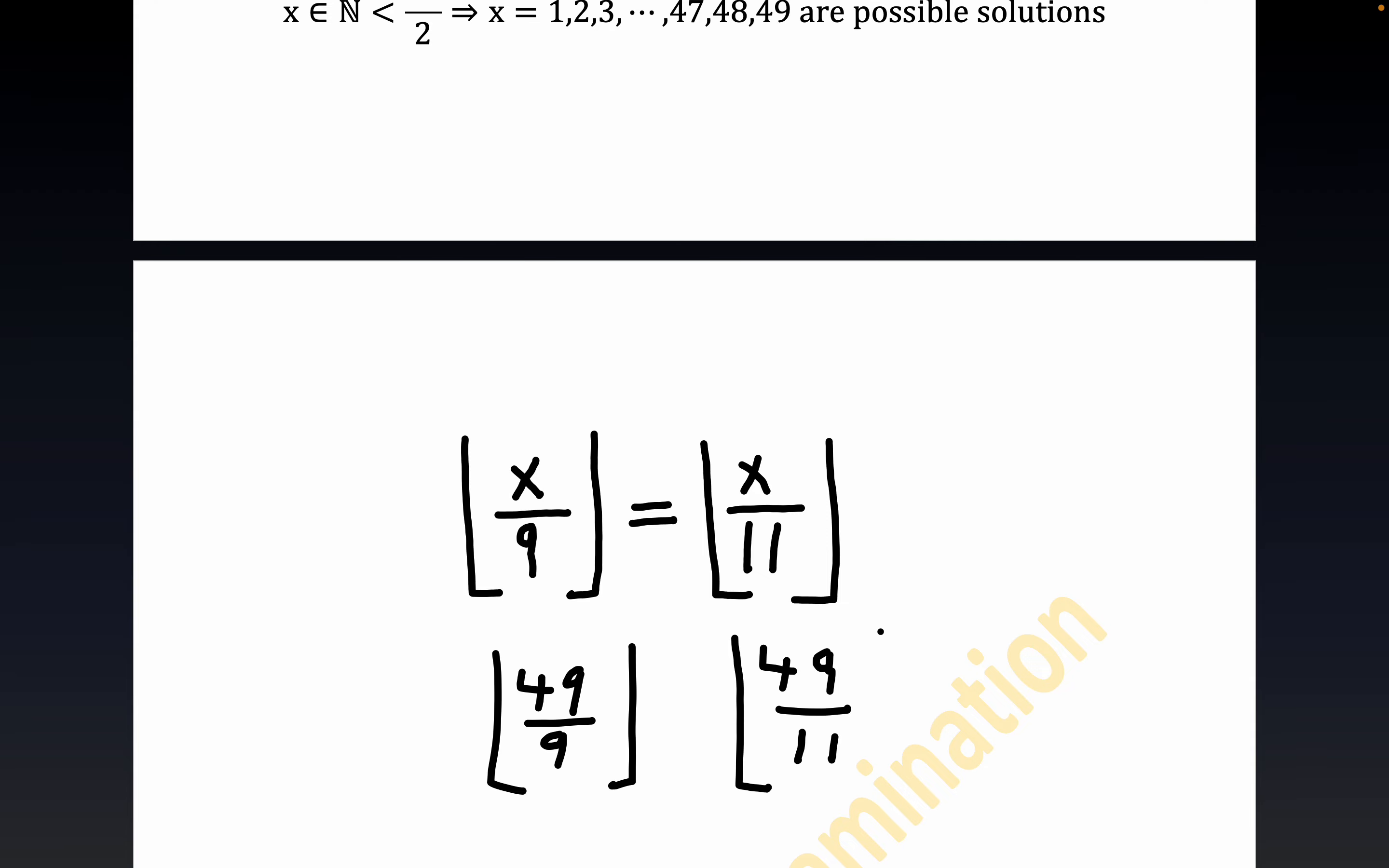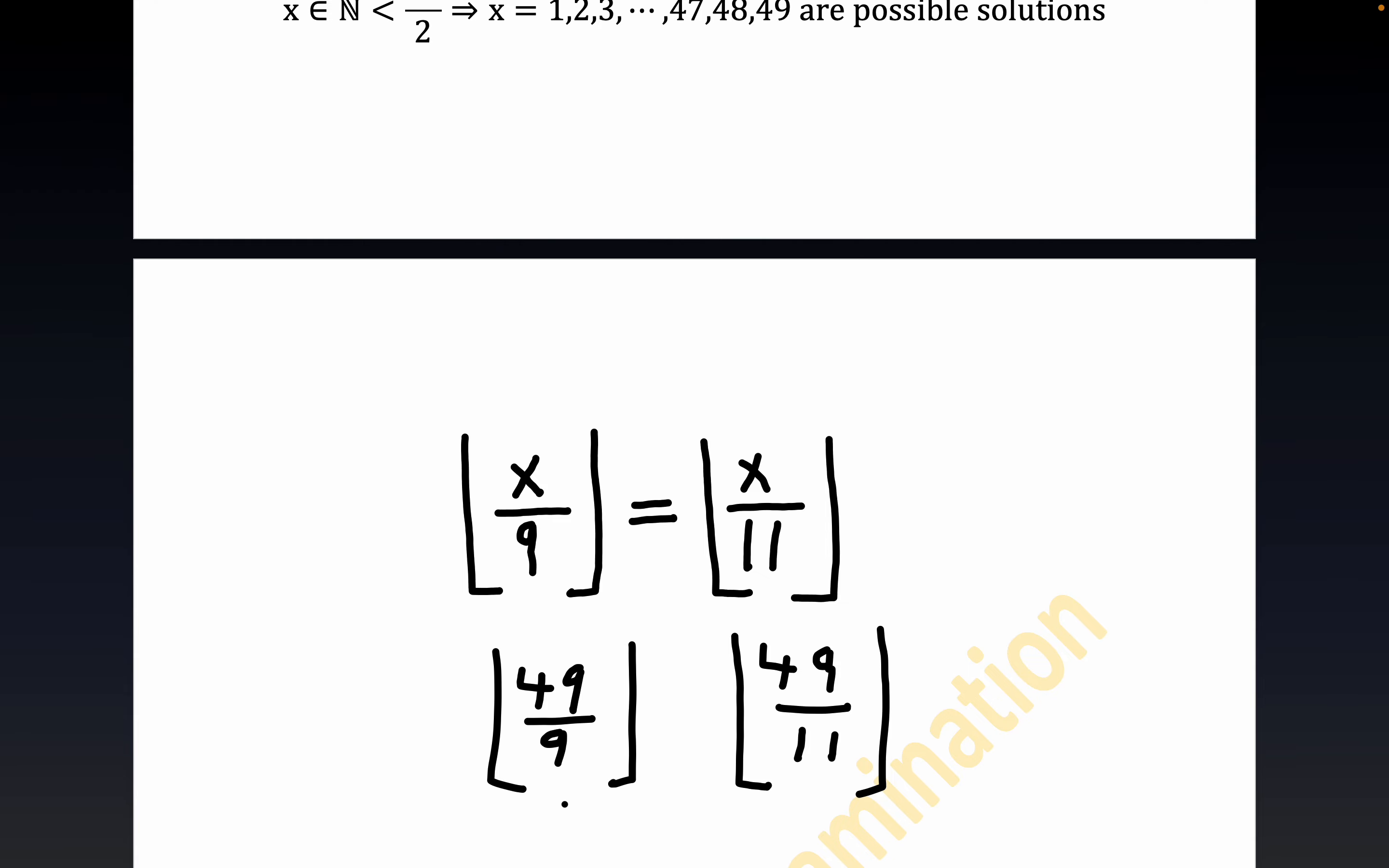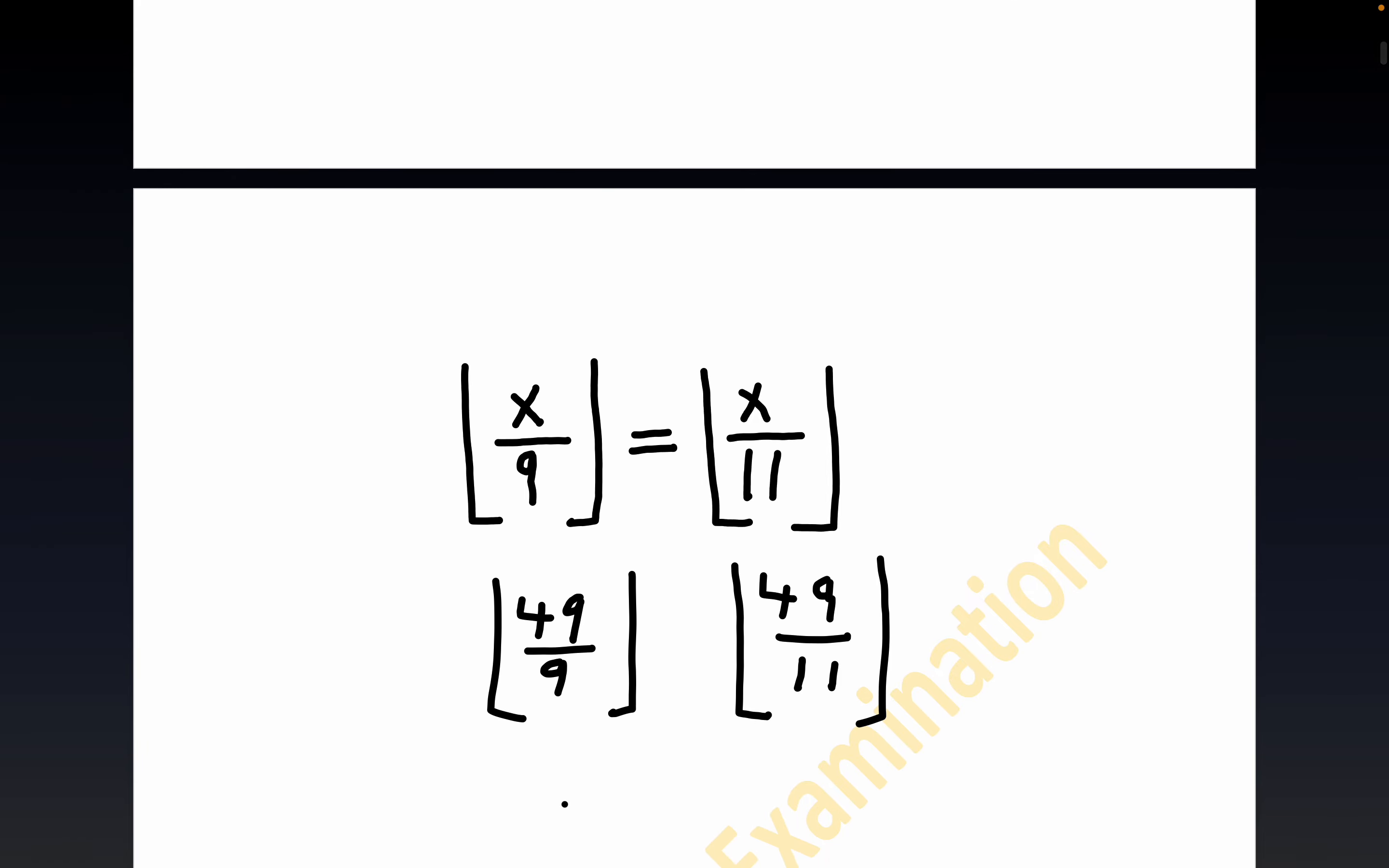So 49 divided by 9 is 5 and 4 ninths, right? So this is actually equal to 5 here. 9 times 5 is 45, then you have a remainder of 4, so it would be 5 plus 4 over 9. The floor would be 5.